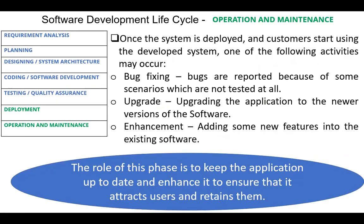The last phase in the software development lifecycle is the operation and maintenance phase. Once the system is deployed and customers start using the developed system, one of the following activities may occur: bug fixing — bugs are reported because of some scenarios which are not tested at all; upgrade — upgrading the application to newer versions of the software; enhancement — adding new features into the existing software. The role of this phase is not limited to fixing errors, but to keep the application up to date and enhance it to ensure that it attracts users and retains them.